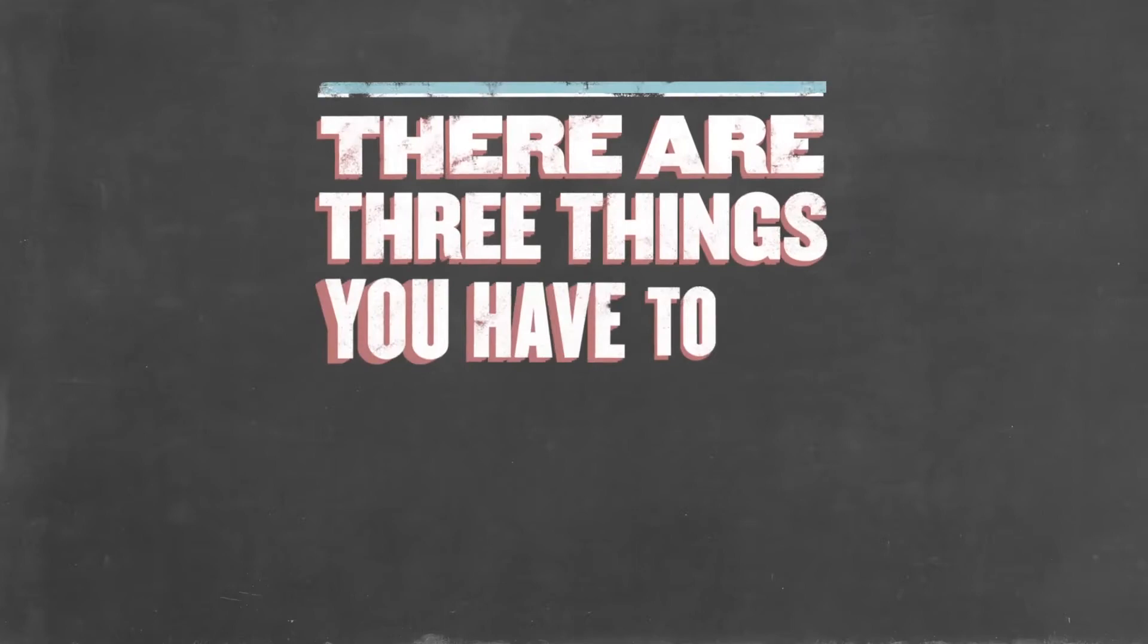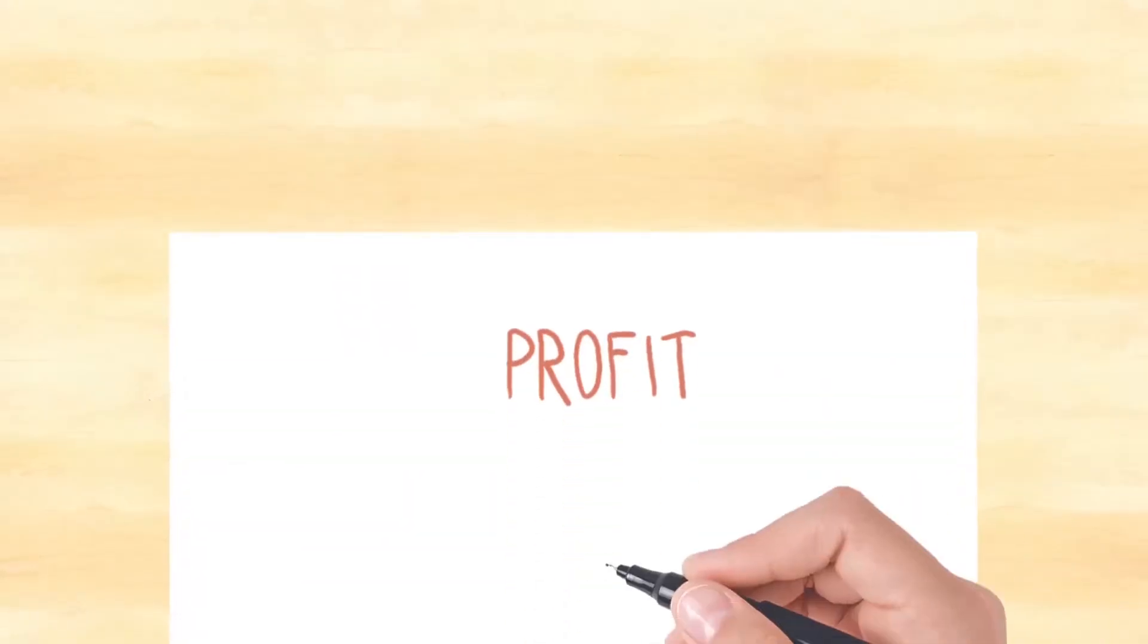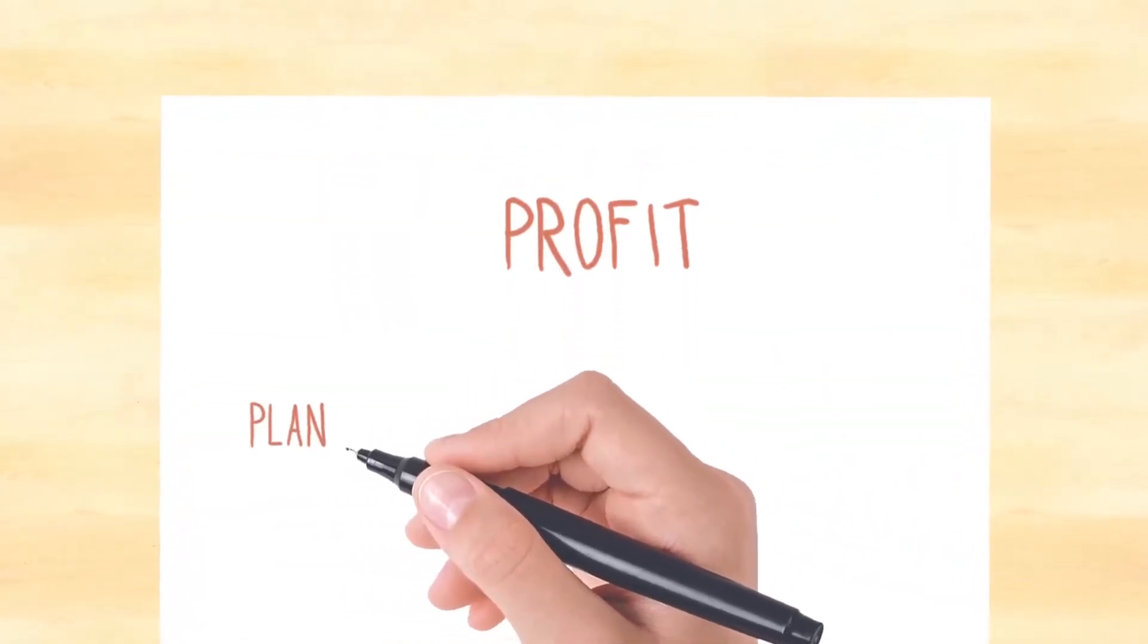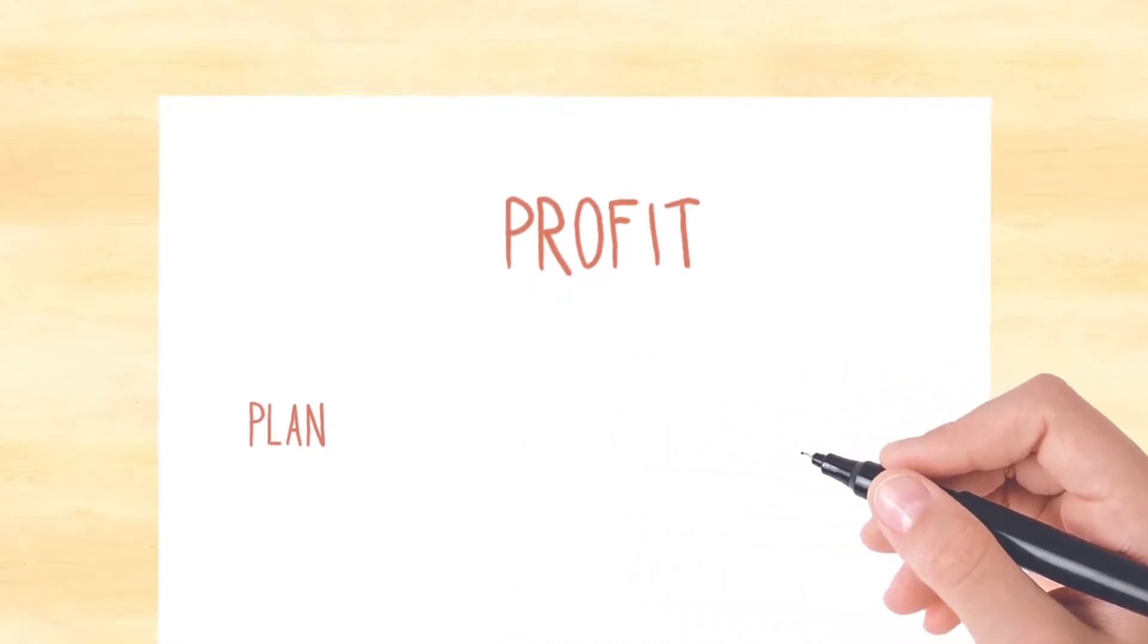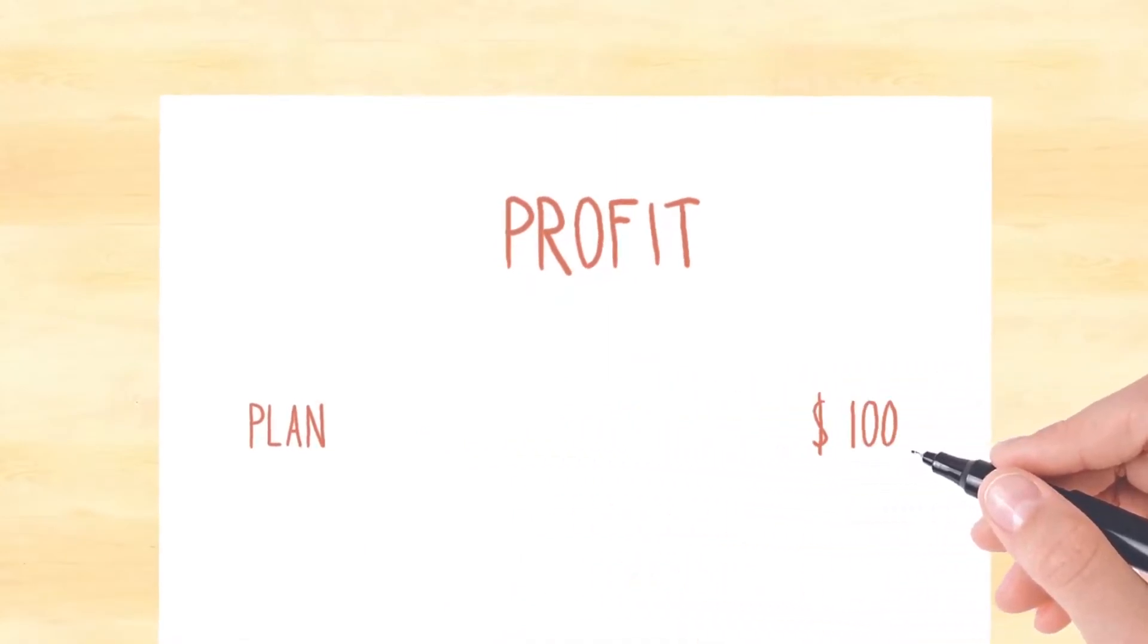There are three things you have to do to make the reconciliation. First, write down the number you had planned or expected. It could be for sales, profits, units produced, whatever.